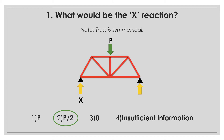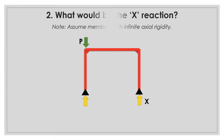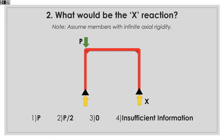What would be the X reaction? There is a frame with a vertical load at one of the corners and we are asking for the reaction at the opposite corner. Since the load is applied directly on the left support, there wouldn't be any reaction on the right support.